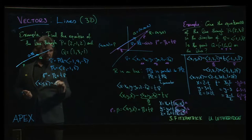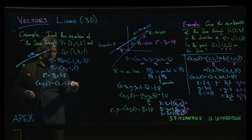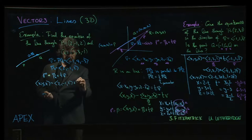x, y, z is going to be 2, minus 1, 2 plus t times minus 1, 4, minus 3.